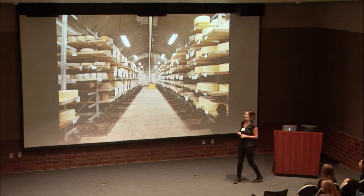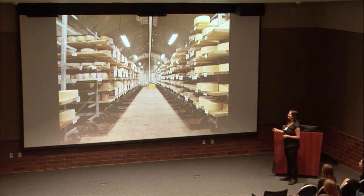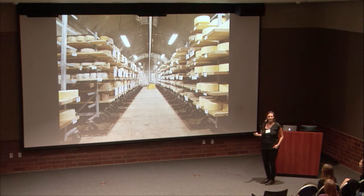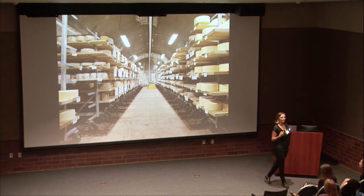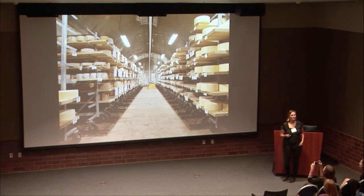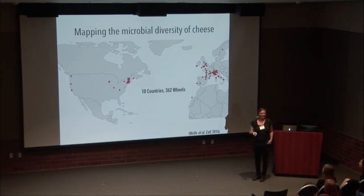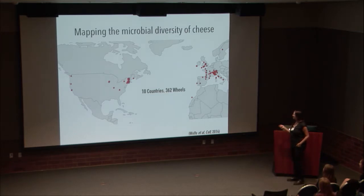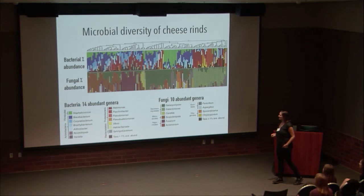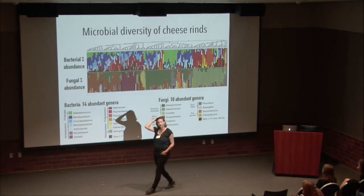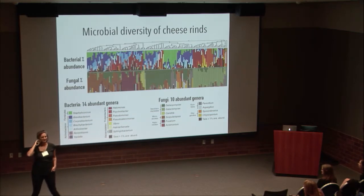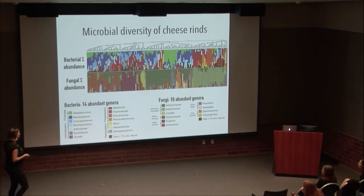To do this, my first postdoc and I spent a lot of time in cheese caves—looking down into a cheese cave in Vermont, where you can see hundreds if not thousands of wheels of cheese aging. We went into this environment and started sampling cheeses much the same way you would sample any environment for a microbiome: collect the sample, bring it back to the lab, extract DNA, and sequence the different parts of the community. We did this across 10 different countries, collecting samples from 362 wheels of cheese. We sequenced the bacterial 16S region as well as the fungal ITS region.